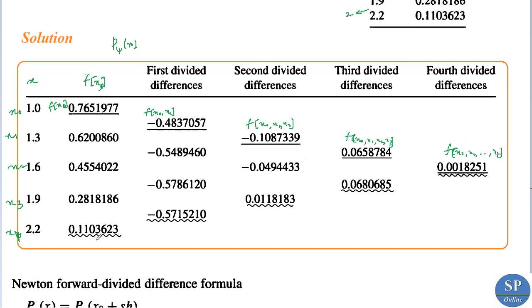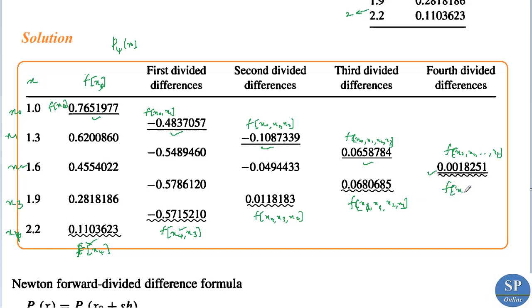From this table, we can use these values for the forward formula — specifically f(x0, x1), f(x0, x1, x2), and so on. For the backward formula, we use f(xn) = f(x4), f(x4, x3), f(x4, x3, x2), f(x4, x3, x2, x1, x0). So these values are used for the backward formula and these for the forward formula.